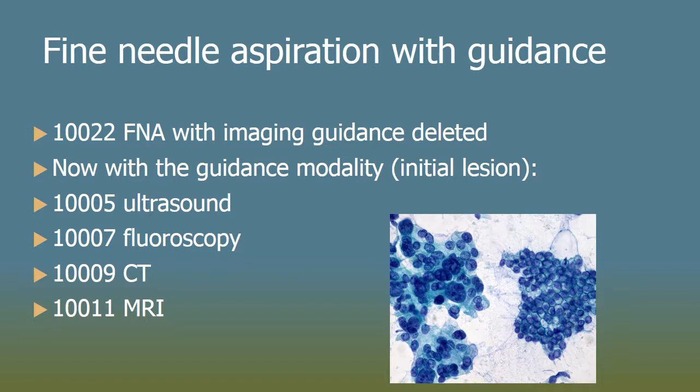An FNA biopsy is done on a semi-solid or liquid lesion such as a cyst, where a very small needle is inserted and a small amount of fluid withdrawn — in that fluid, some tissue clumps or cells can be found. This is distinct from a core needle biopsy, in which an actual solid tissue plug is removed. Here you see an FNA of the pancreas: normal cells on the right, stained, and cancerous cells which are much larger with multi-lobulated nuclei, surrounded by fluid as they're dripped onto the slide.